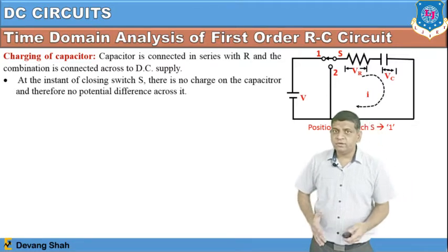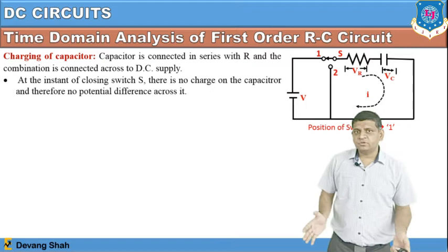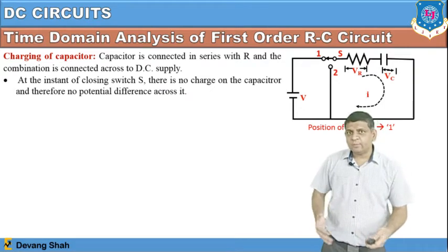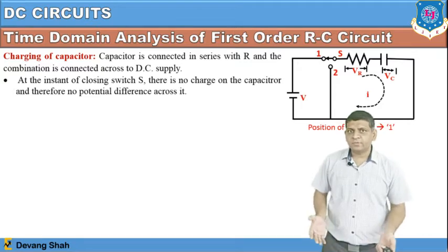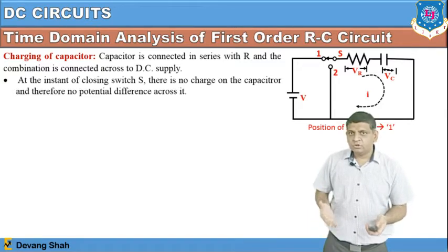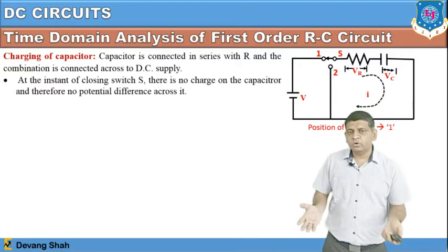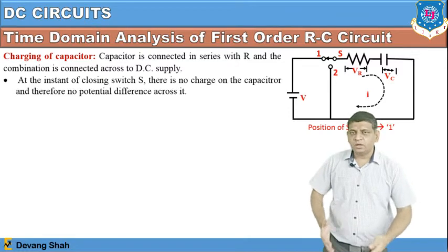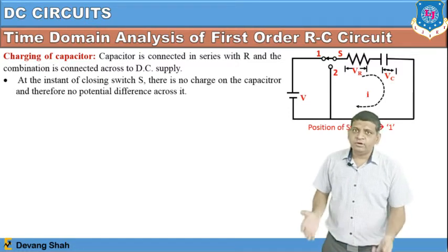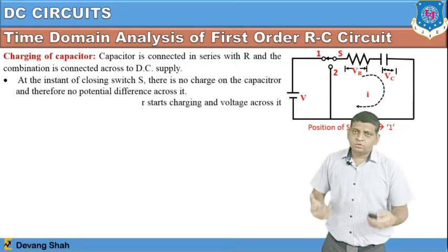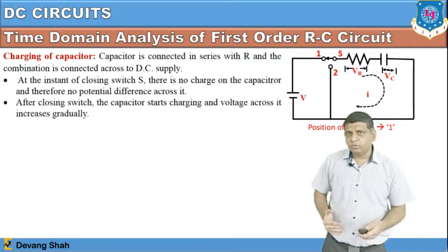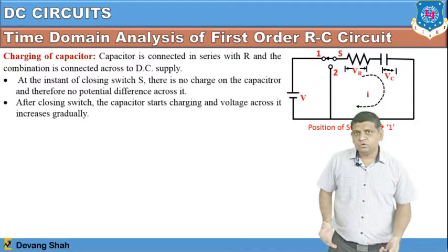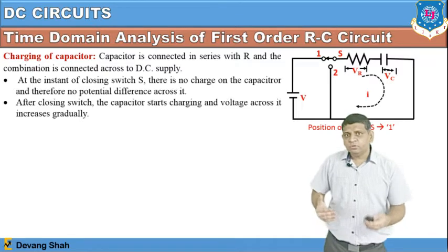The capacitor is going to be charged. As discussed in our previous session, both inductor and capacitor are related with time. Once you apply a DC source to an inductor or capacitor, they charge gradually. Once you remove the voltage source, they discharge. This charging and discharging is not an instantaneous process but a gradual one. Today we will learn how to charge and discharge a capacitor and observe that behavior.